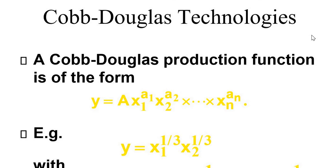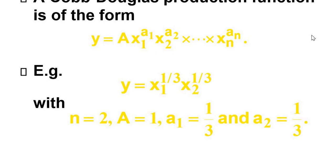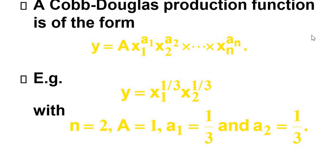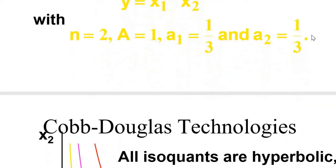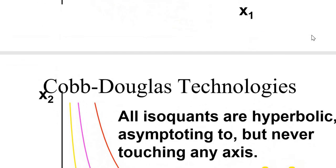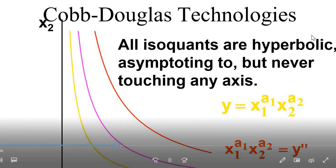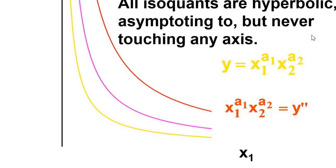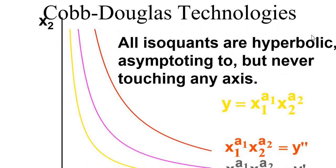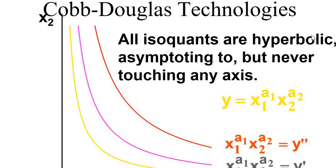We can have Cobb-Douglas technologies. The first is the general form of the Cobb-Douglas production function. Here the value of n equals 2, a equals 1, a1 equals 1/3, and a2 also equals 1/3. For Cobb-Douglas technologies, all isoquants are hyperbolic, asymptoting to but never touching any axis. If an isoquant touches an axis, it would mean you can produce without using one of the inputs, which does not make sense.